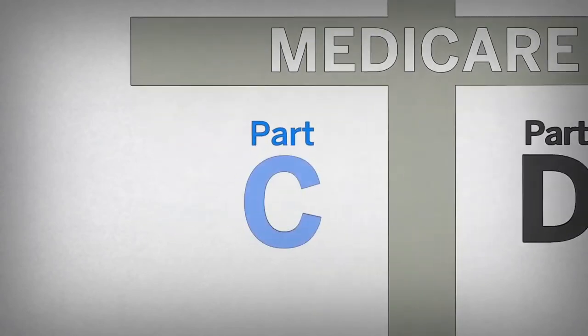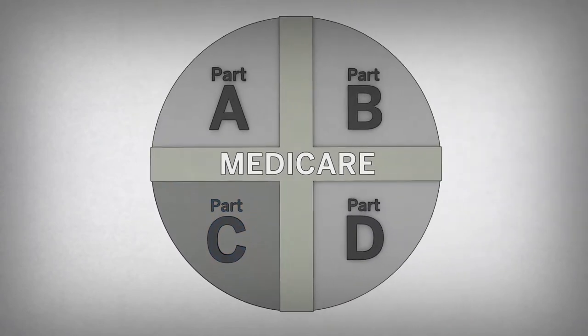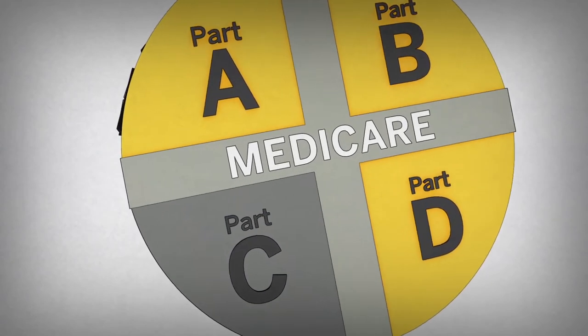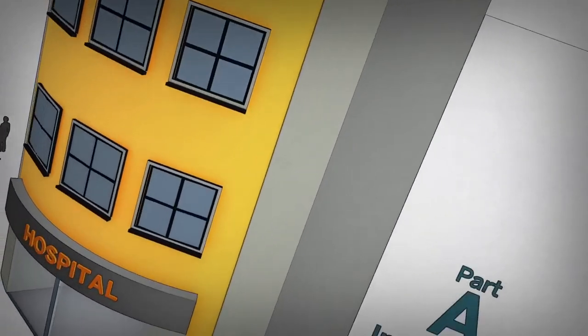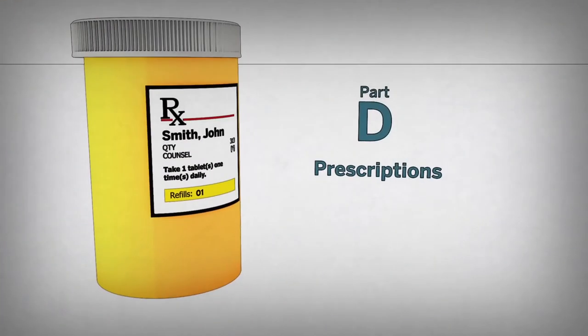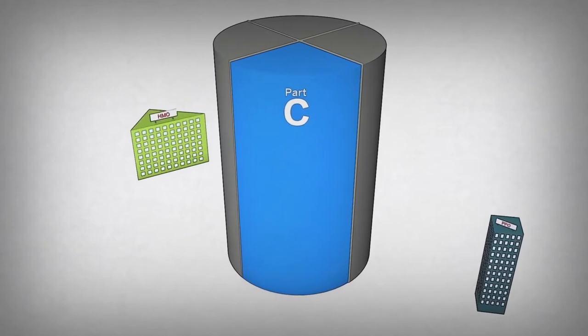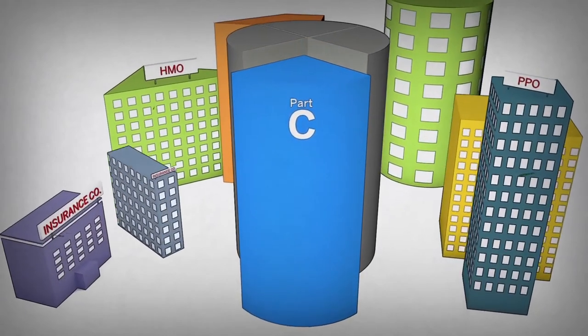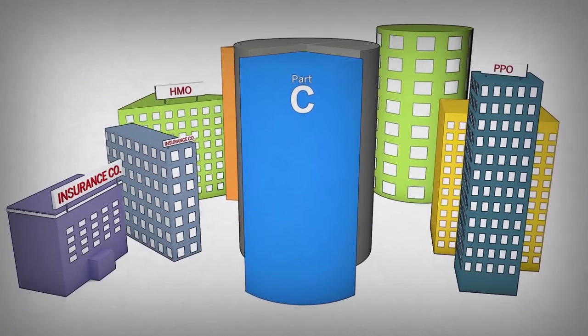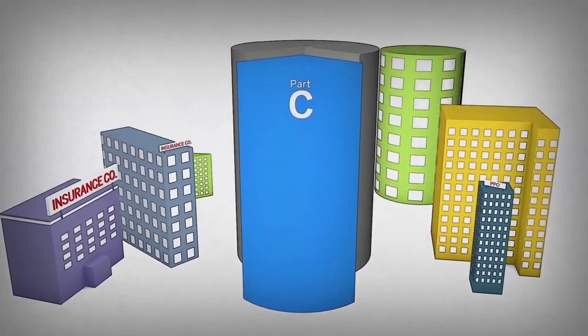Also known as Medicare Part C, Medicare Advantage differs from traditional Medicare in that it doesn't define categories of health coverage in the same way as Medicare Parts A, B, and D. Instead, it's a special program that invites private payers, including health plans and insurance companies, to provide alternatives to traditional Medicare insurance.